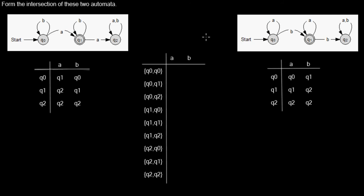The intersection means that we want to create a new automaton that consists of all transitions that are present in both automata. One issue is that in both automata we have an initial state, but the states themselves can have different names. Here it's a coincidence that they have the same names from Q0 to Q2, but they could be named totally different — this doesn't matter.